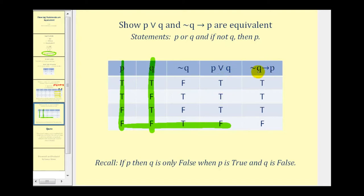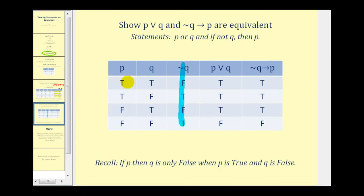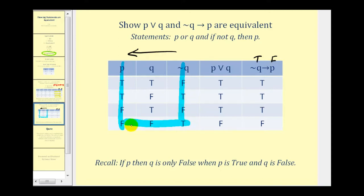Now we're going to look at if ¬q then p. We need to be careful because we're looking at columns in the opposite direction — here's our hypothesis ¬q, and here's p. The only time this is false is when ¬q is true and p is false. ¬q is true here and p is false here, which is the only time this conditional is false.